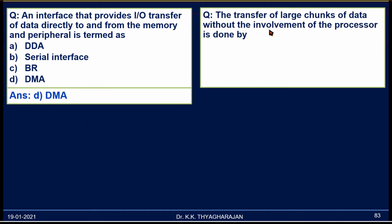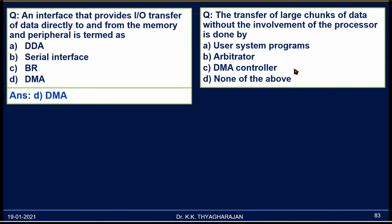The transfer of large chunks of data without the involvement of the processor is done by: A) User System Programs, B) Arbitrator, C) DMA Controller, D) None of the above. In the case of a DMA Controller, the processor just initiates the DMA transfer and at the end terminates it. The processor is not used for the actual data transfer — the data is transferred using the DMA process, controlled by the DMA Controller. The correct answer is C.